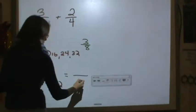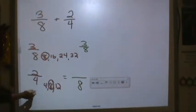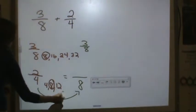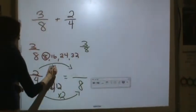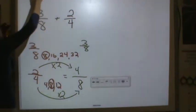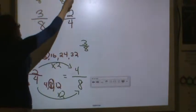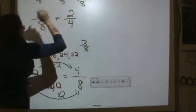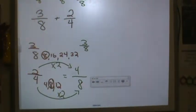Two-fourths is equal to something eighths. Well, I'm doing four times two to get to eight. Two times two is equal to four. Now I can add these fractions. So I have three-eighths plus four-eighths is equal to seven-eighths and I do not need to simplify.